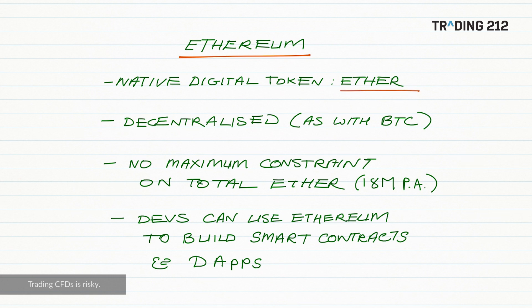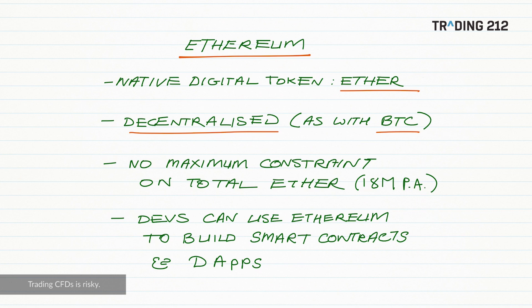There are a number of parallels with Bitcoin. Ethereum comprises a decentralized network of nodes, just as with Bitcoin, and just as with Bitcoin, digital tokens enter circulation via mining of new blocks in the blockchain. In contrast with Bitcoin, where there is a finite maximum number of coins that can ultimately be mined, there is no maximum constraint on total Ether, though there is a limit of 18 million per annum.